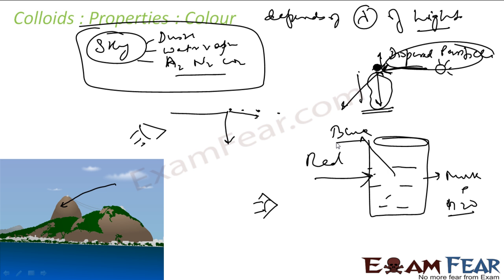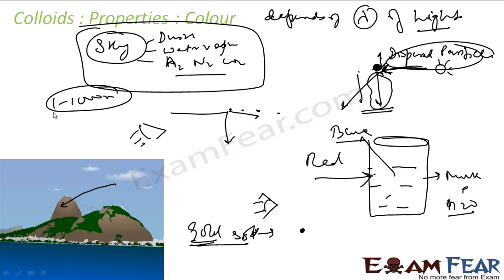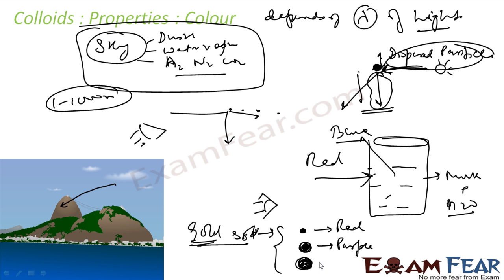Another good example is the gold sol. The colloidal size ranges from 1 to 1000 nanometers. If you prepare a very fine gold sol where the colloidal particle size is around 10 to 20 nanometers — the lower range — it appears red in color. That is why stained glass made with gold appears red, even though bulk gold has a golden color. If you increase the particle size, still within the colloidal range of 1 to 100 nanometers, it appears purple.